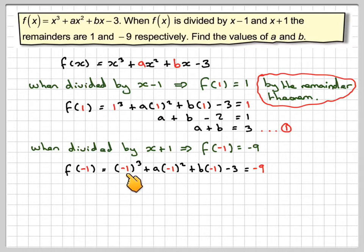Be careful when we're cubing here, because when you cube a negative number, you get a negative number. When you square a negative number, it becomes positive, so we're going to get plus a there. Here we're going to have minus b, minus 3 equals minus 9. And then we're going to have a minus b minus 1 and minus 3 is minus 4. Therefore a minus b equals minus 5. If we add 4 to this side, we've got equations 1 and 2.